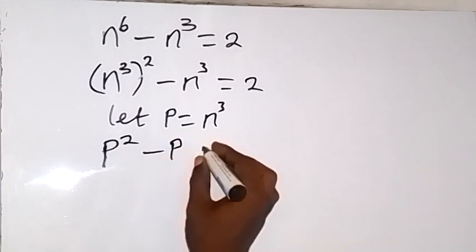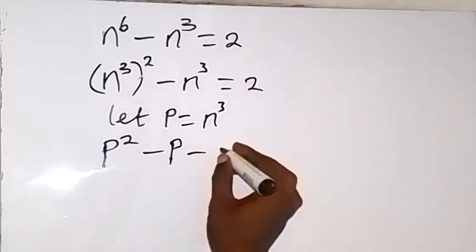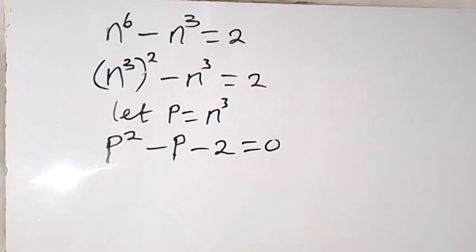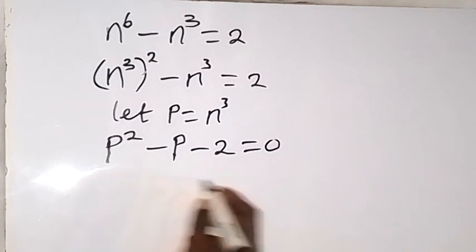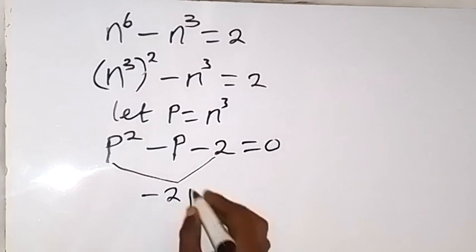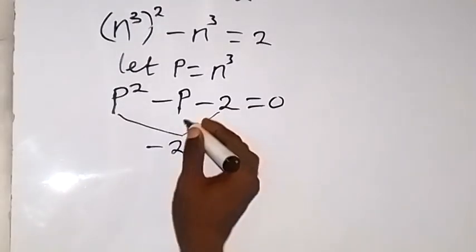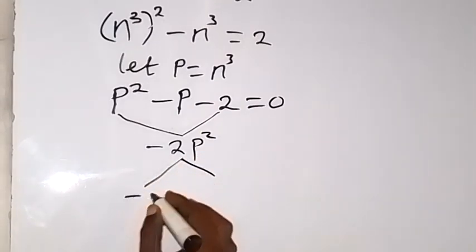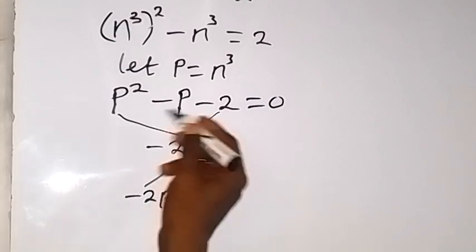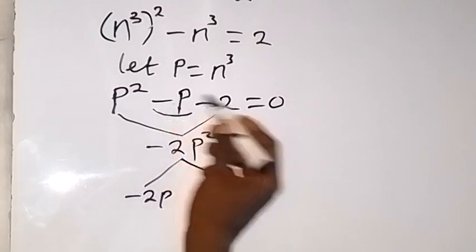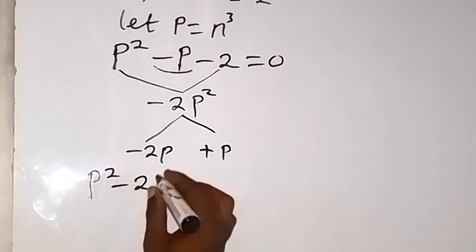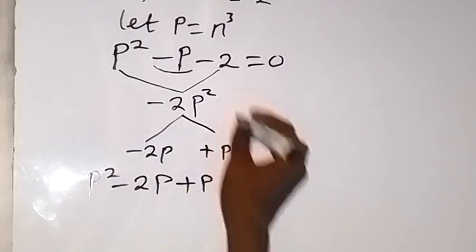This becomes p squared minus p, then bringing this over we have minus 2, leaving 0 on the right. When we solve this quadratic equation, we can factorize. The two factors give us minus 2p and plus p, because when we multiply them we get minus 2p squared, and when we add them we get minus p. So we replace the middle term with these two, giving us p squared minus 2p plus p minus 2 equals 0.